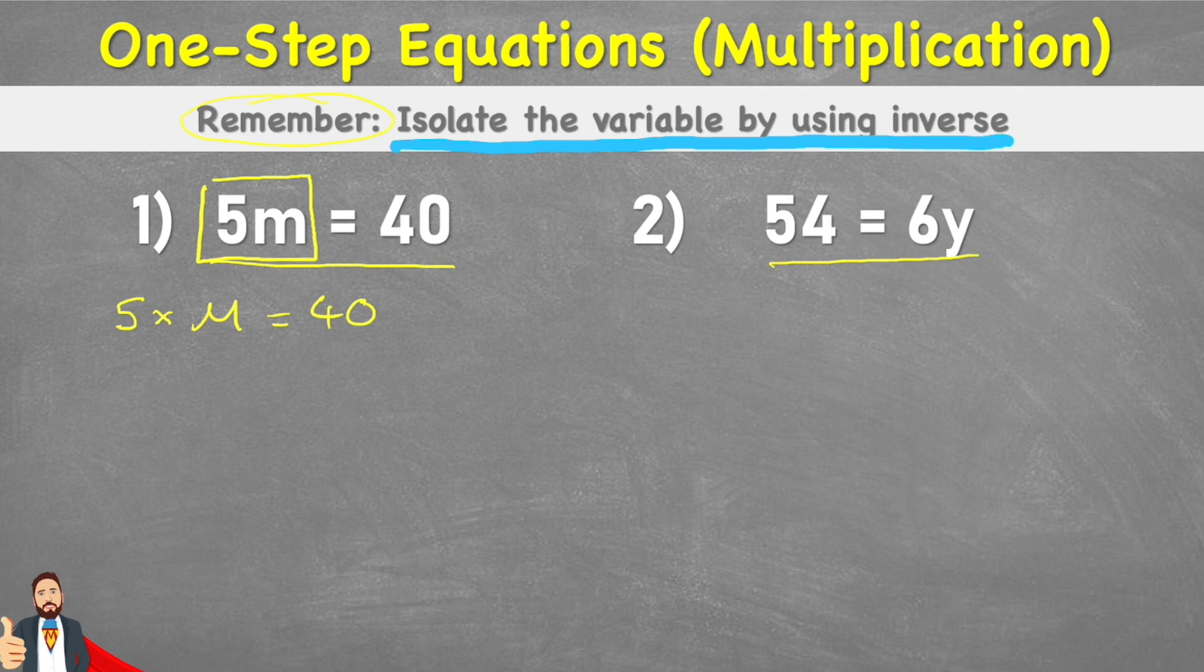So what are the other number sentences? Well if 5 times m equals 40, then m times 5 must also equal 40. And we also have two division questions, two inverse questions. I could have 40 divided by m equals 5, or 40 divided by 5 equals m.